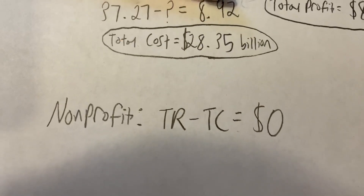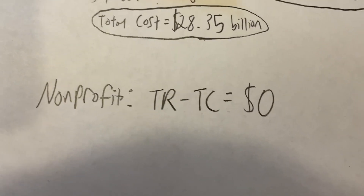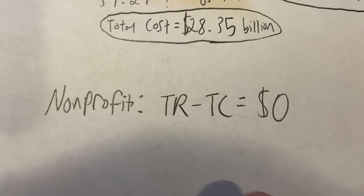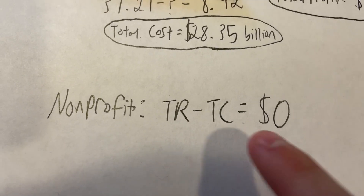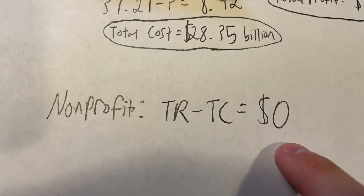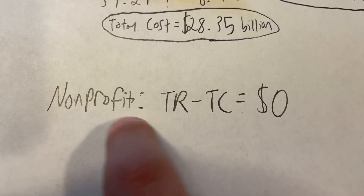Now let's take a look at another type of company known as a non-profit. A non-profit has the exact same formula as a regular company, except their total revenue minus their total cost should equal zero dollars, because they're not trying to make any profit. To find a good example of this, let's look at one of the nation's largest non-profits.